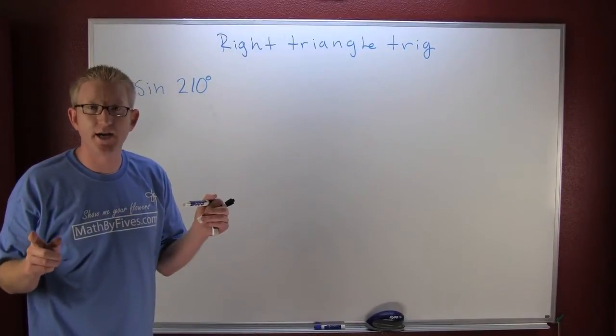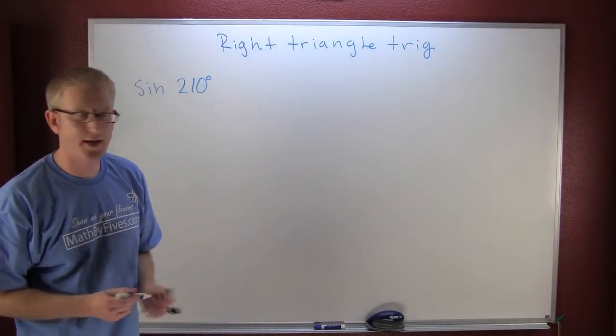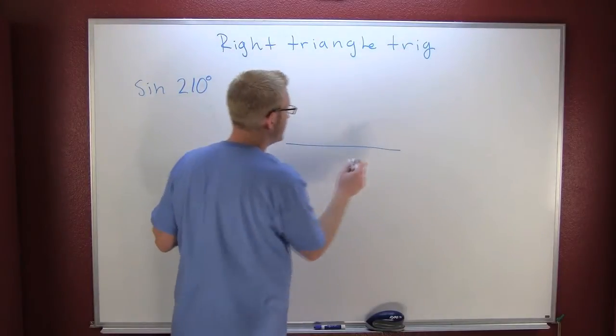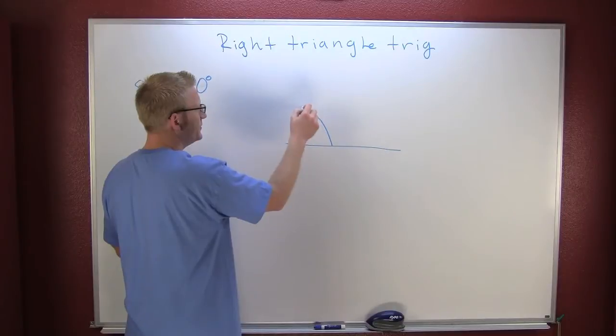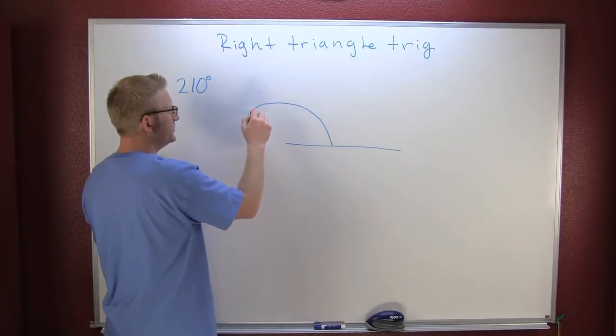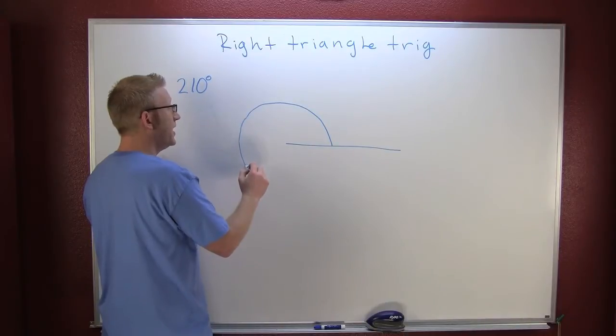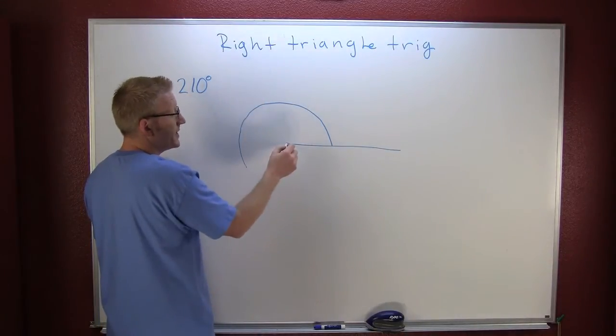A few different ways to find the sine of 210 degrees. First we could draw the thing. When we're talking about drawing an angle of 210 degrees, tell me where to stop. Right about there? That's about 210 degrees.